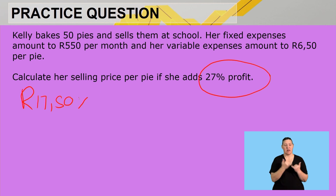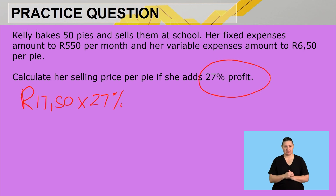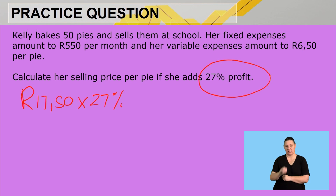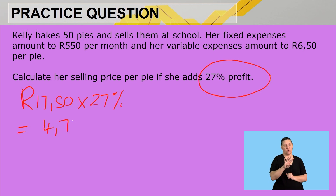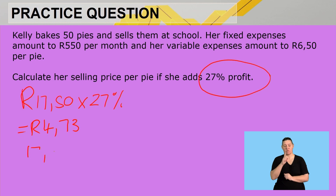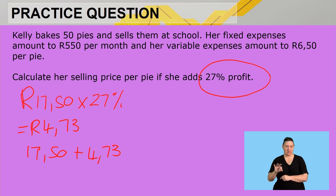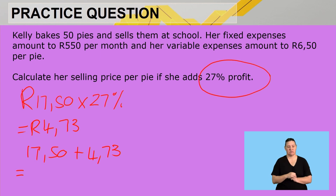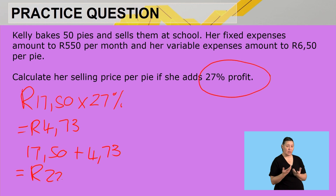We need to add profit at 27%. On your calculator: R17.50 times 27% gives a profit of R4.73. So she is going to sell them for R17.50 plus the profit of R4.73, giving a selling price of R22.23.